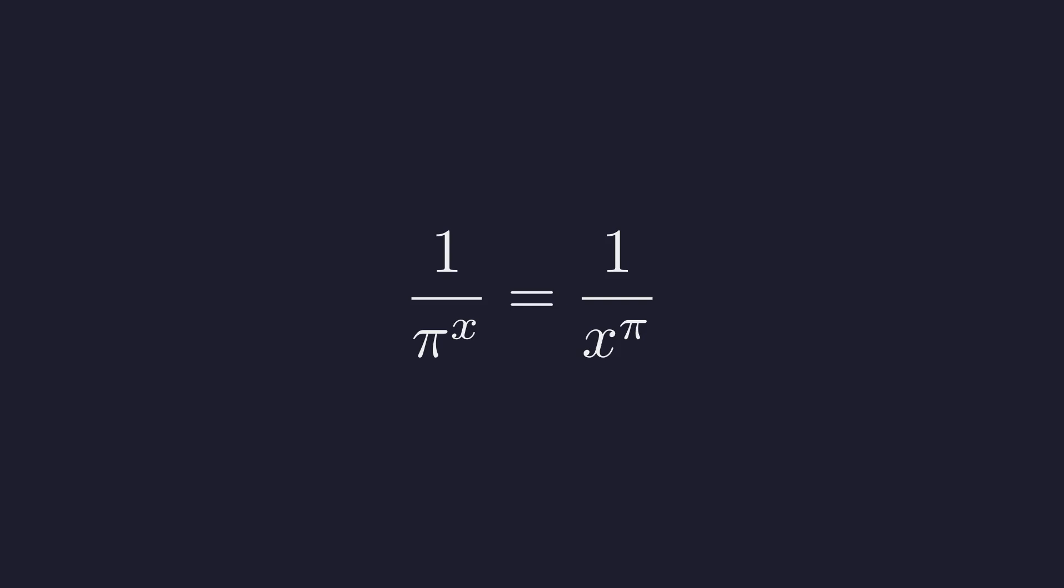Taking the reciprocal of both sides is a standard algebraic move, and boom—look at this beautiful symmetry: x to the power of π equals π to the power of x. The variable and the constant have swapped roles. This is the form we'll work with.